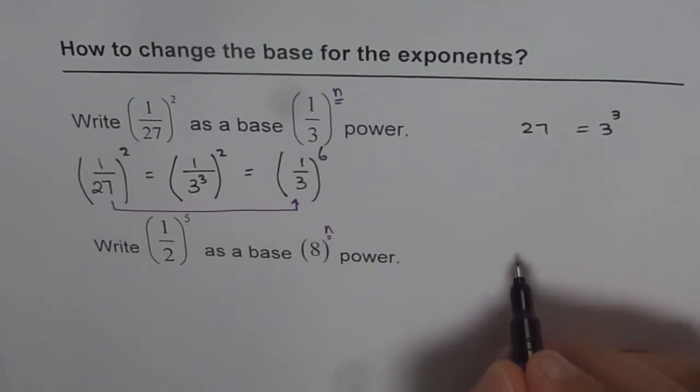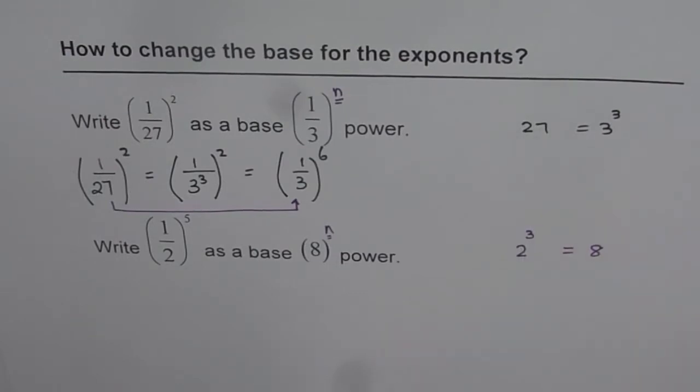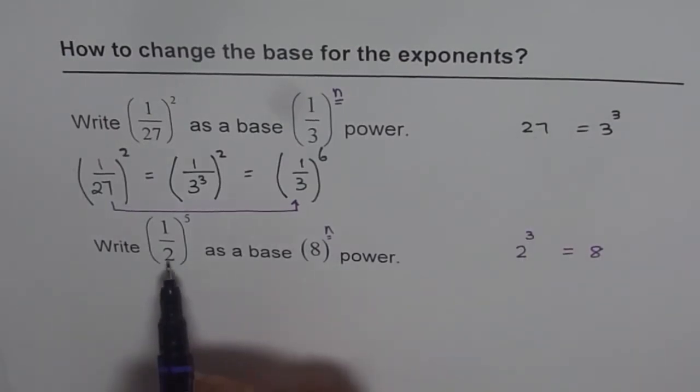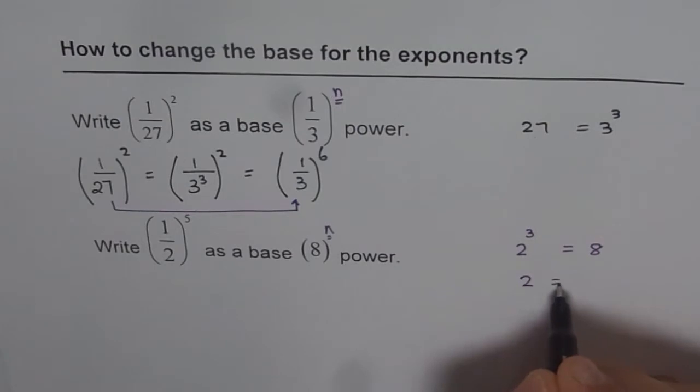How is 2 related with 8? 2 cube is 8, right? 2 cube is 8. So if I have to write 2 as something to the power of 8, I can write this as 2 is equal to 8 to the power of 1 over 3. So we will use this relation.